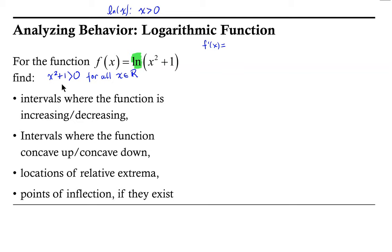f prime of x: keep in mind that we are using the natural log function. By the chain rule, I attend to the derivative of the natural log function first, which is 1 over the argument. In this case, the argument is x squared plus 1, times the derivative of the argument by the chain rule, which is 2x. So our first derivative is 2x over the quantity x squared plus 1.